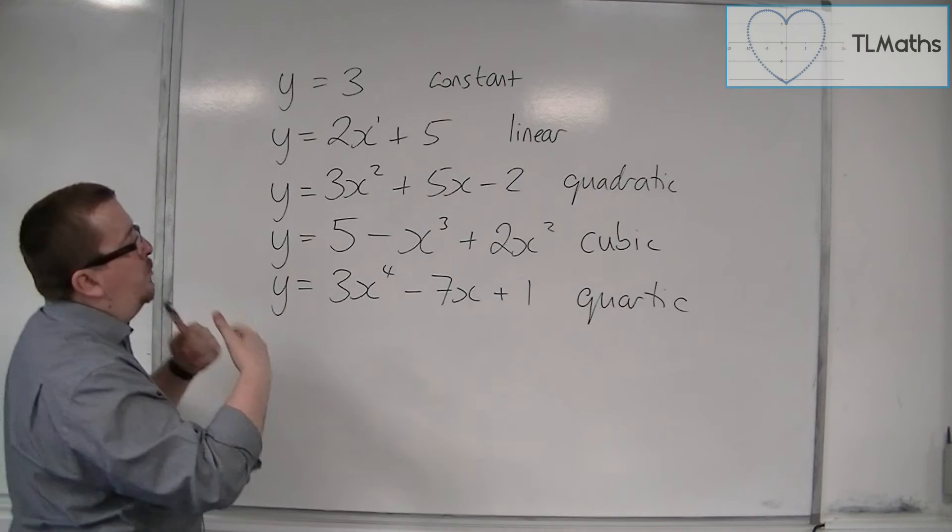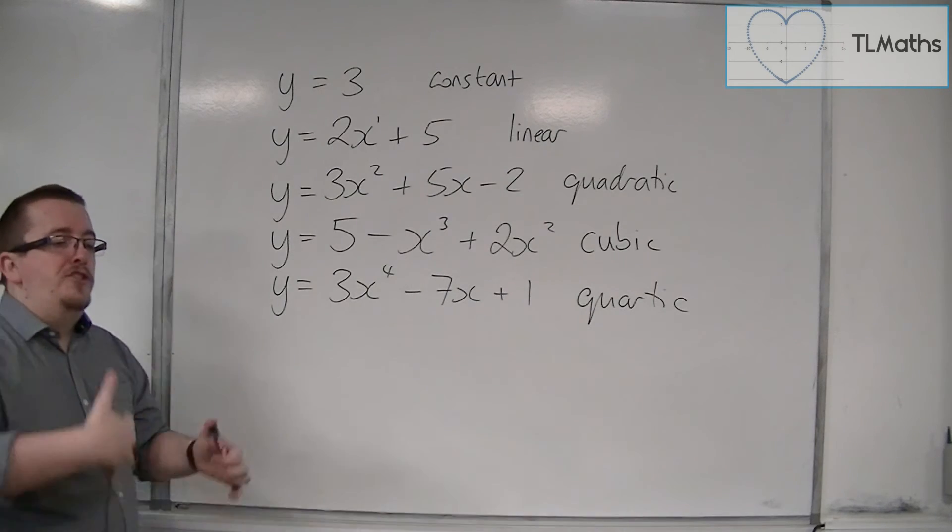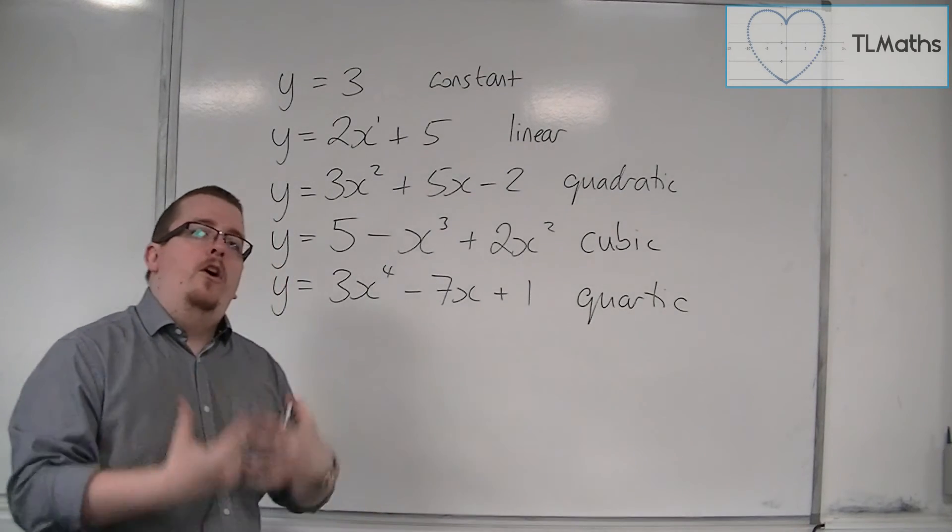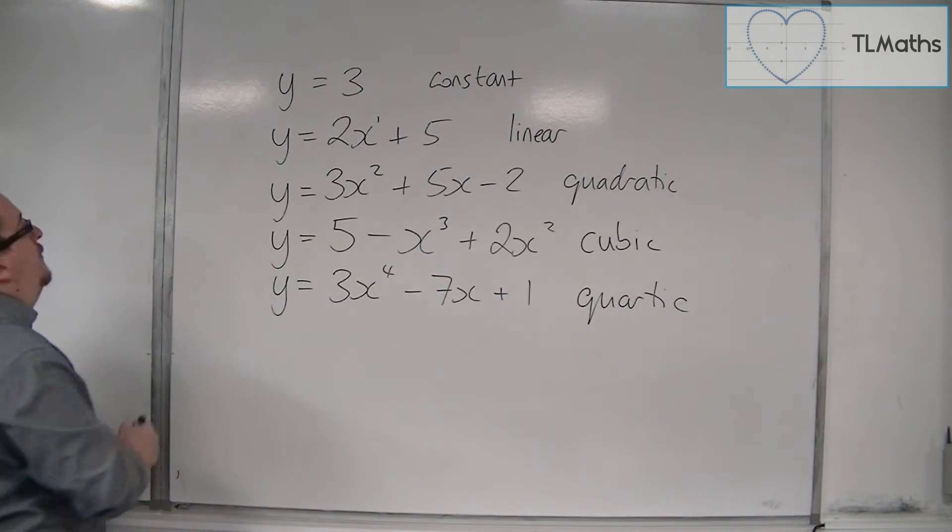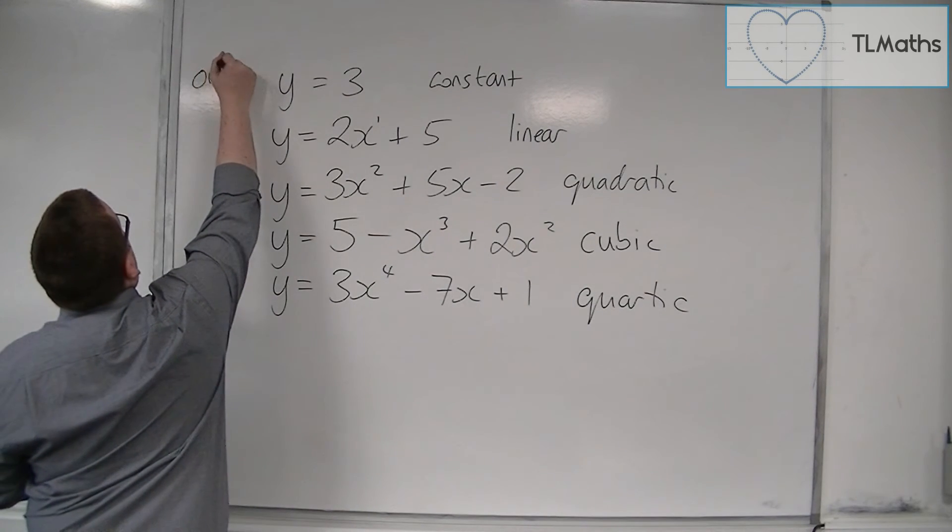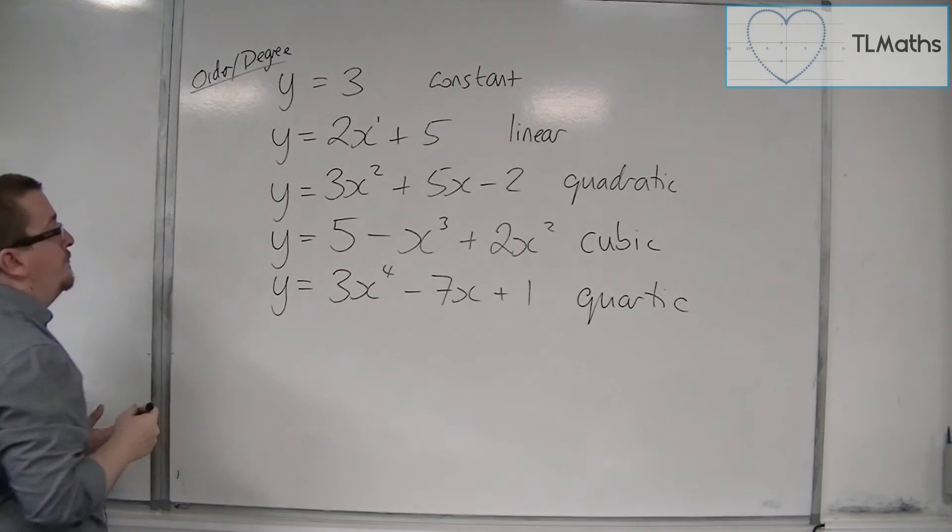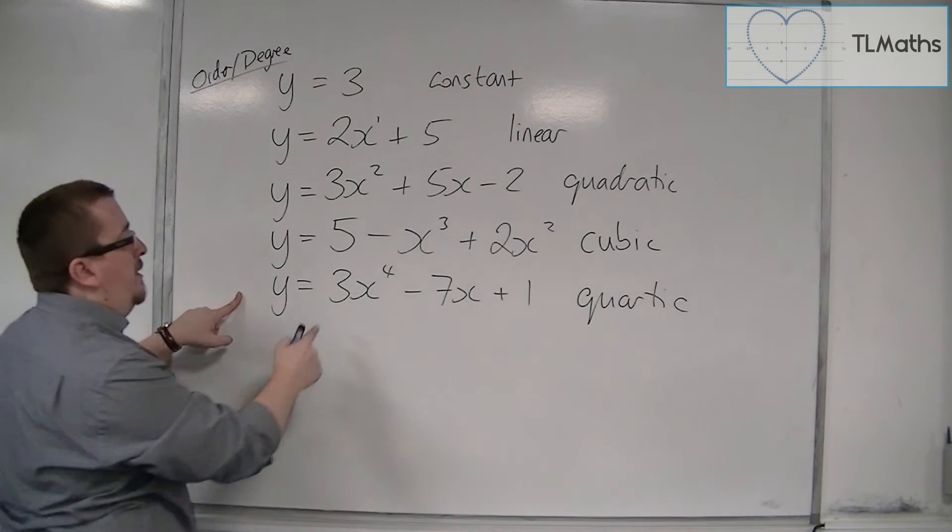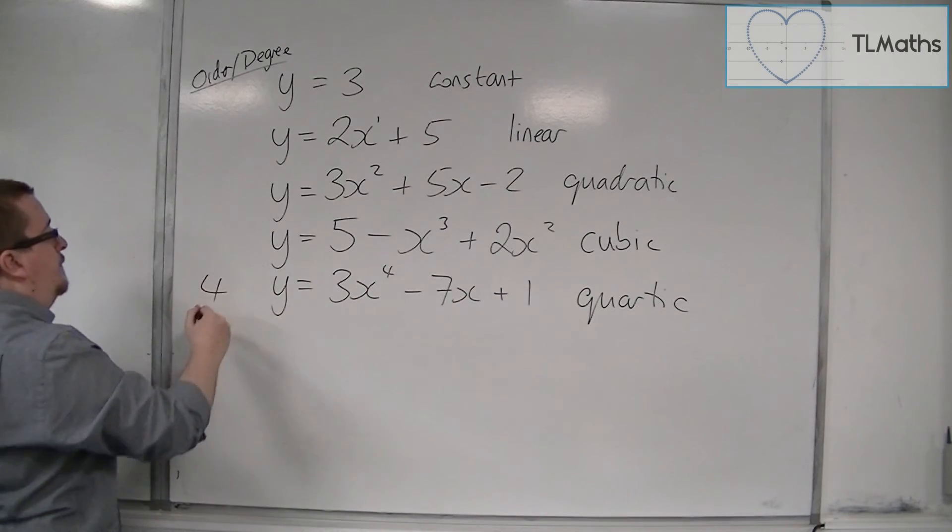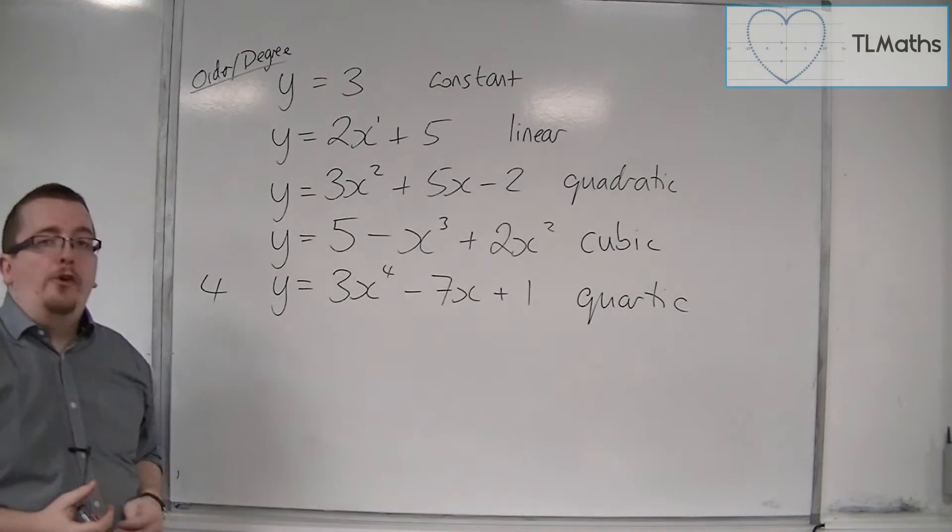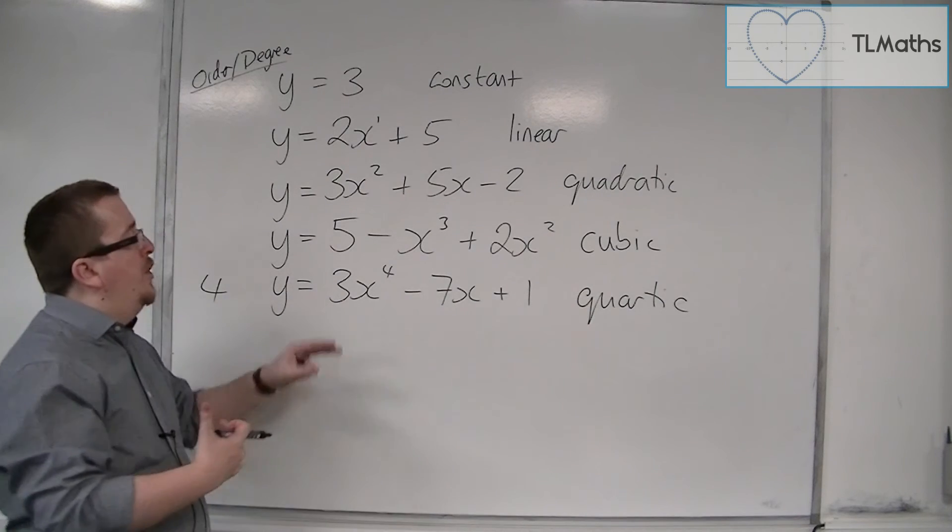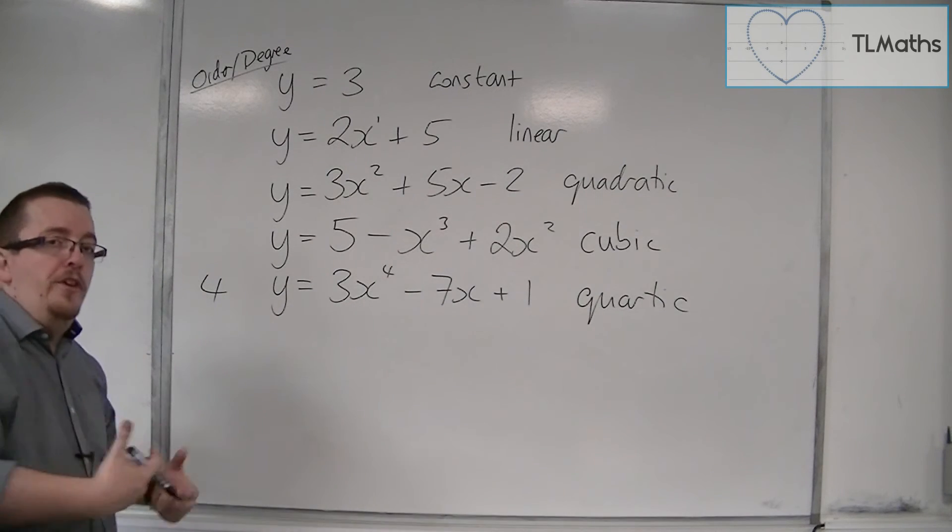That is what we refer to as the degree or the order of the polynomial. So we refer to the order or degree of the polynomial. Here, for example, it is 4. This is an equation of degree 4, or a polynomial of degree 4, or order 4.